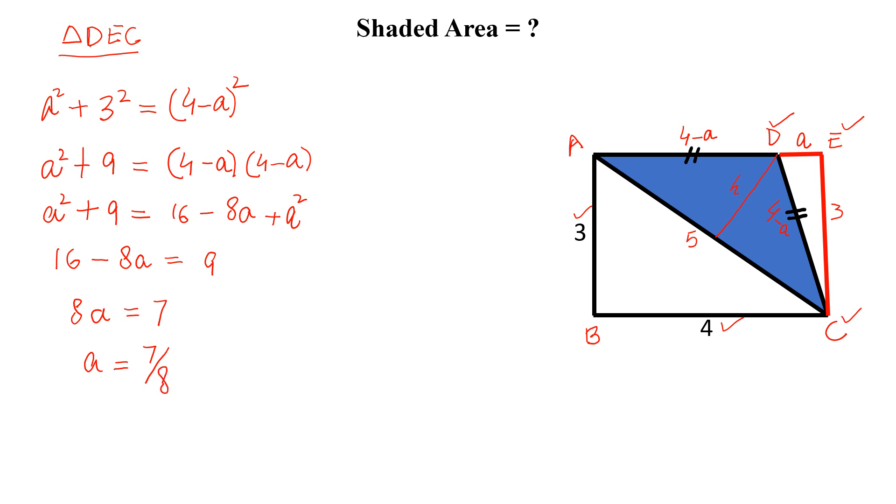Now if A is 7 by 8, then this length will be, this is 4 minus A, so this will be 4 minus 7 by 8. And if we simplify this, this will be equal to 25 by 8. So this length is 25 by 8.